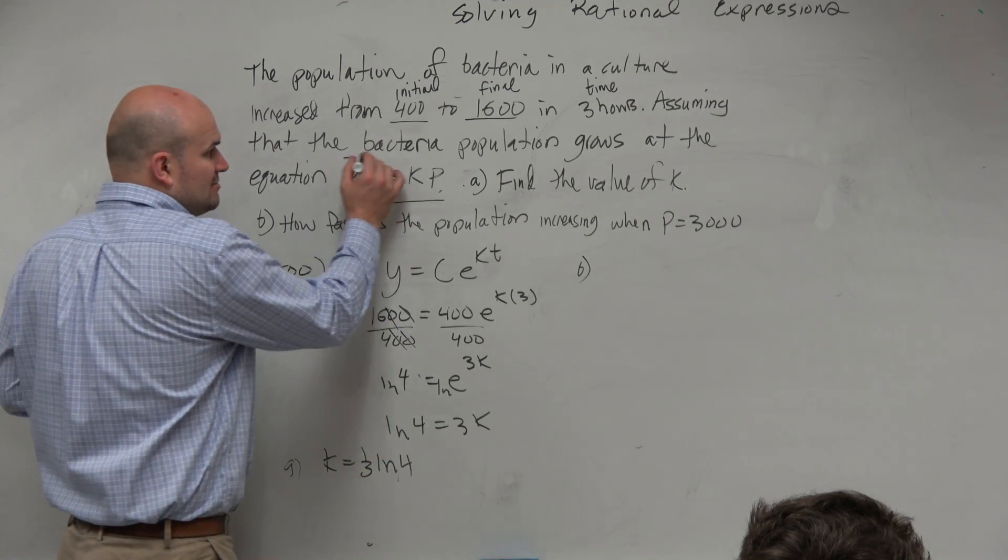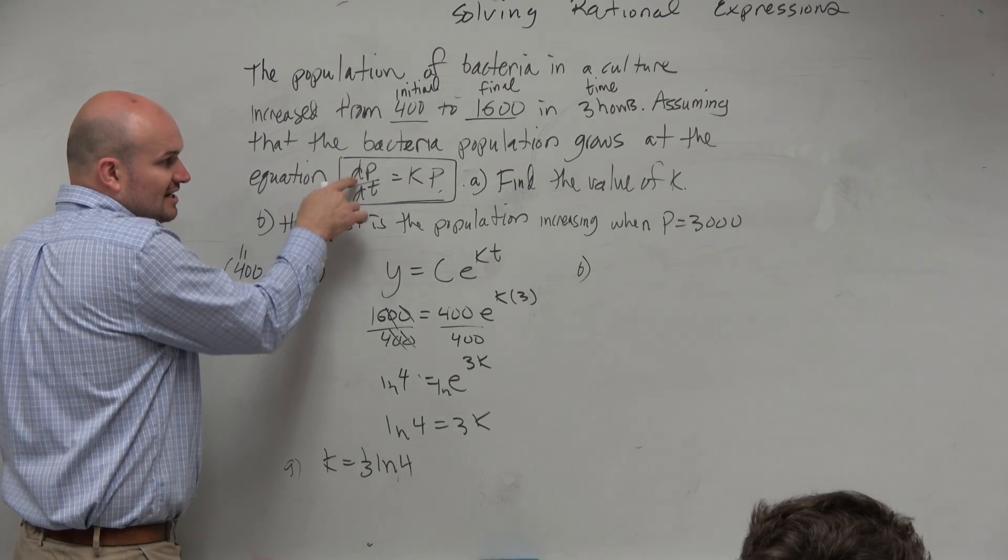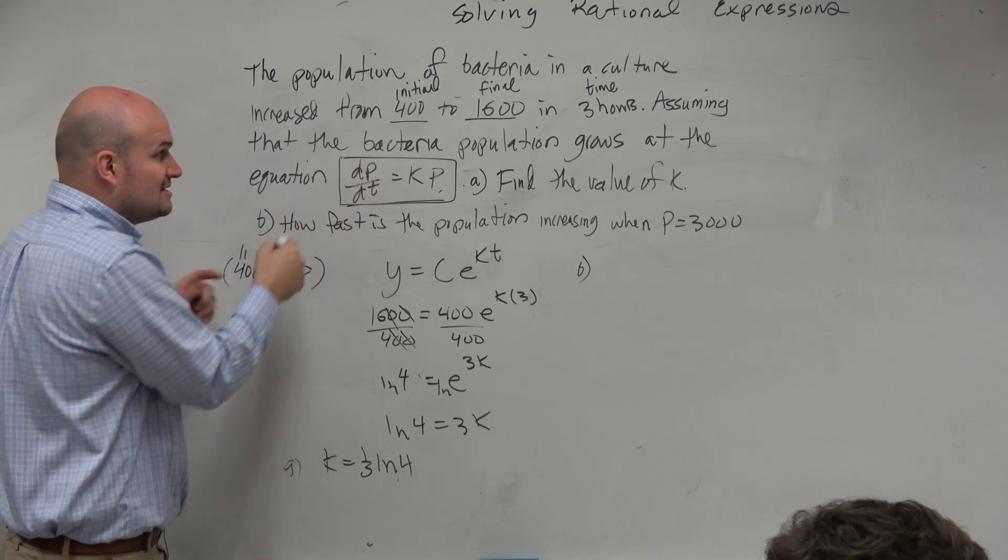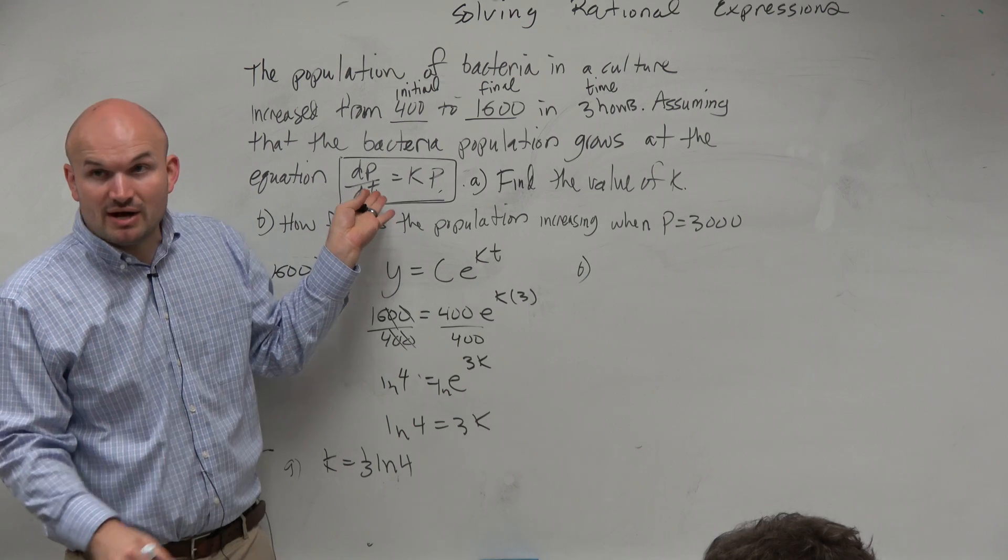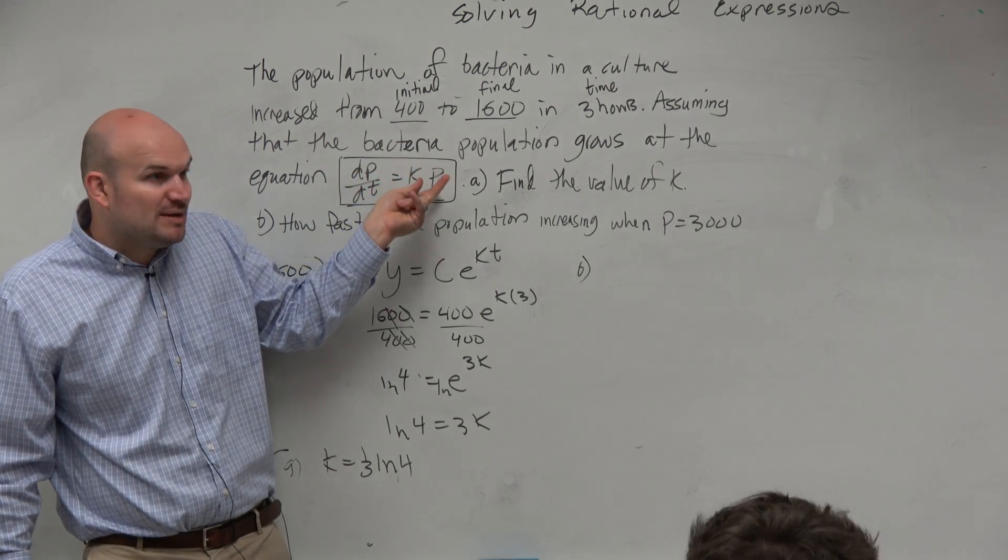So what we can do is kind of go back to this original equation, right? It's asking us, that's going to be your rate, is how fast is something growing, right? That's going to be like your slope, how fast is something growing, is equal to k times p.